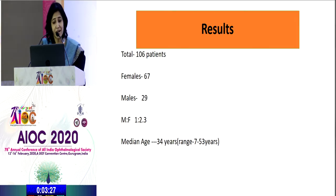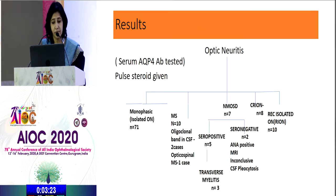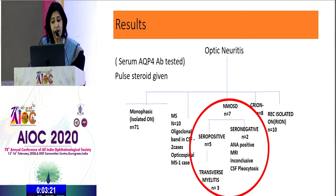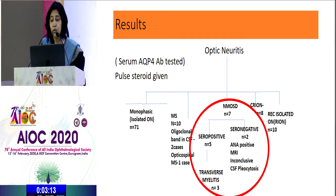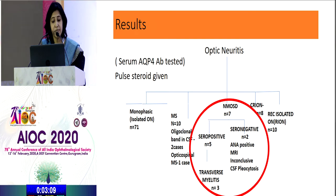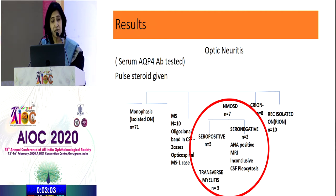We had a total of 106 patients, with females outnumbering males and a median age of 34 years. We found seropositivity in five of our cases, out of which three developed transverse myelitis in the next couple of months. All of these were included as NMO spectrum disorder. Two were seronegative but other features suggested them to be suffering from NMOSD. We had 10 patients on follow-up who developed MS, 71 patients were monophasic, eight patients developed chronic relapsing inflammatory optic neuropathy, and 10 developed recurrent isolated optic neuropathy.